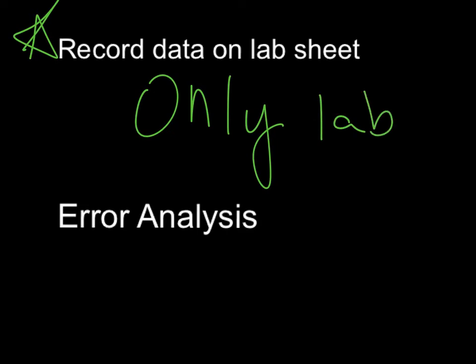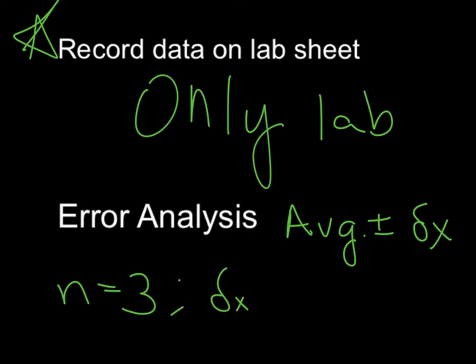The second thing we're going to look at is error analysis. Remember, we will always record as some average value plus or minus an uncertainty. Now in this case, since our number of samples is 3, which is less than 10, delta x, your uncertainty in x, is going to be your max deviation from the average.